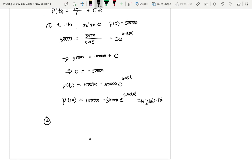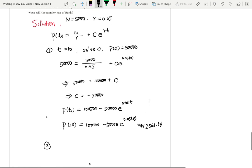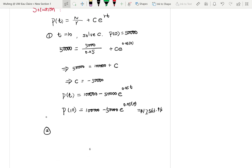The second part asks when will the annuity run out of funds, which means the balance is 0. When does it equal 0? So 100,000 - 50,000e^(0.05t) = 0.